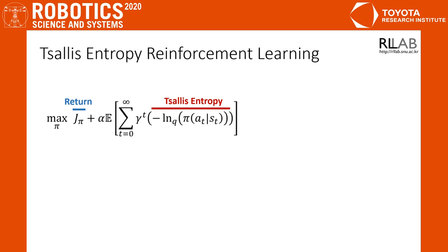Here is the objective function of Tsallis entropy reinforcement learning. J_π is the return, which is the original objective of reinforcement learning. But we add a long-term Tsallis entropy as a regularization. Maximizing the Tsallis entropy encourages exploration, and we can control the exploration-exploitation tradeoff by using the entropy index.